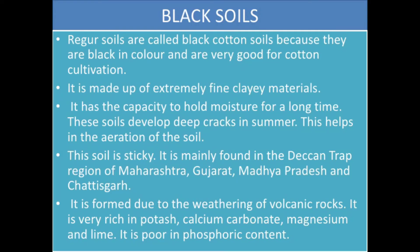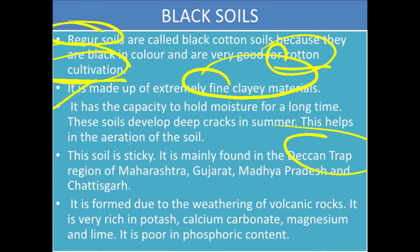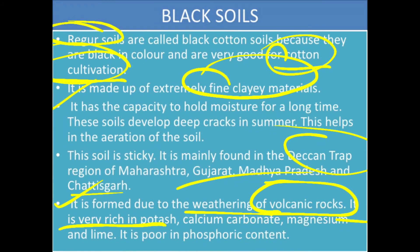The second type is black soil, also called regur soil. It is important for cotton cultivation and is made up of extremely fine clay material. It has a high capacity to hold moisture for a long time, is very sticky, and is mainly found in the Deccan Traps region of Maharashtra, Gujarat, Madhya Pradesh, and Chhattisgarh. It is formed due to weathering of volcanic rocks and is rich in potash, calcium carbonate, and magnesium, but poor in phosphoric content.